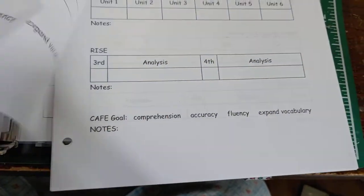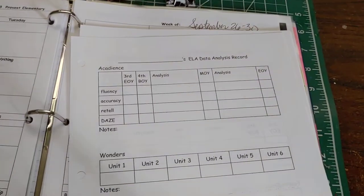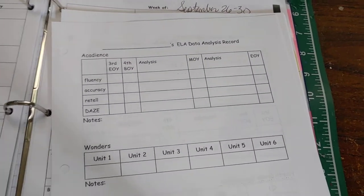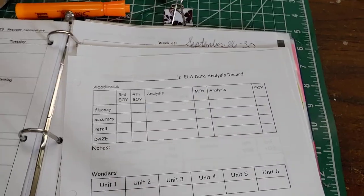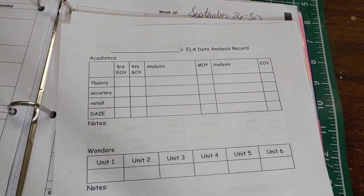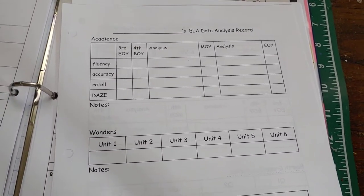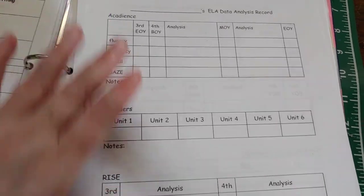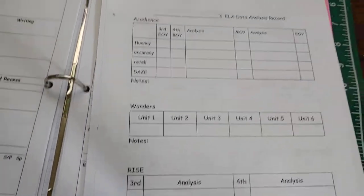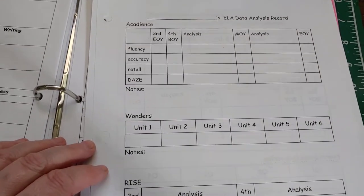So I start filling this out. This information is available for students who've been in my school before, and oftentimes given a few weeks if I look in the cumulative file of new students it's going to be there as well. So I fill this out as much as I can for each student.